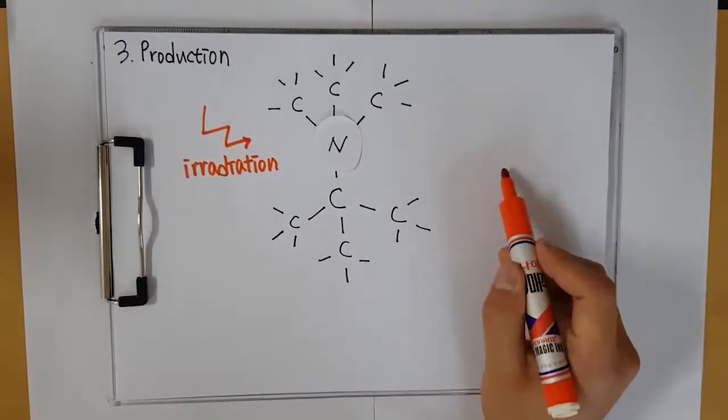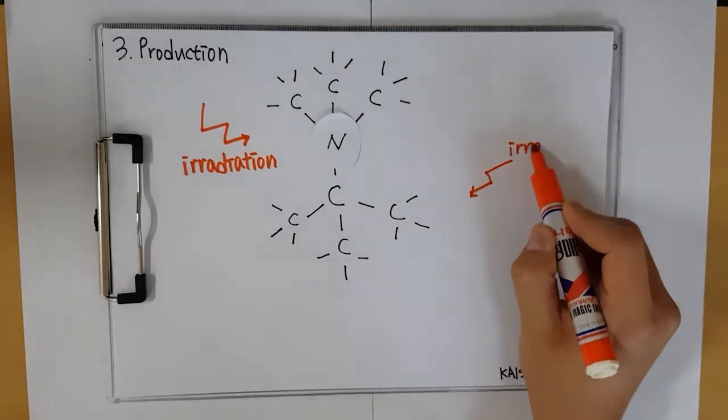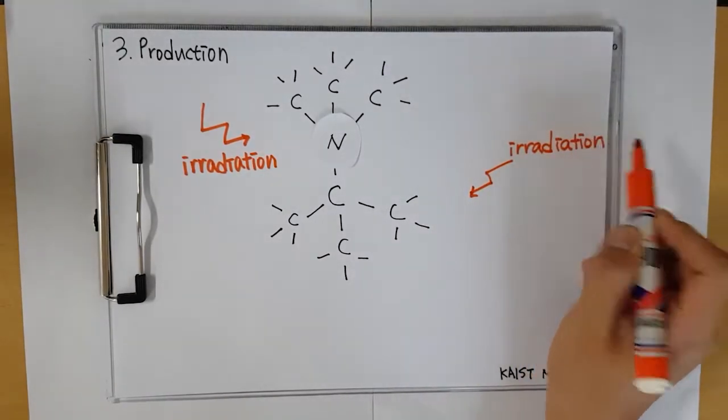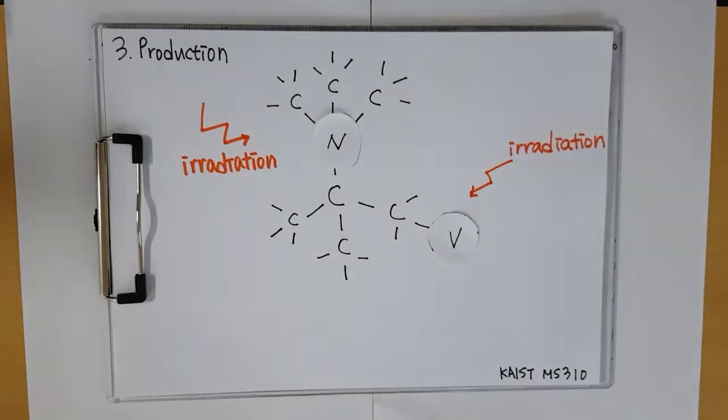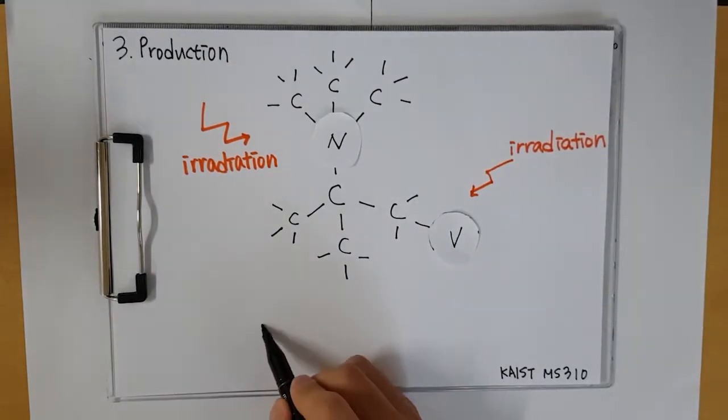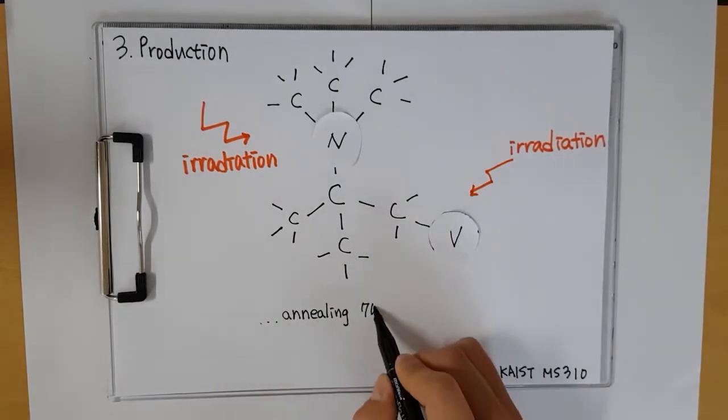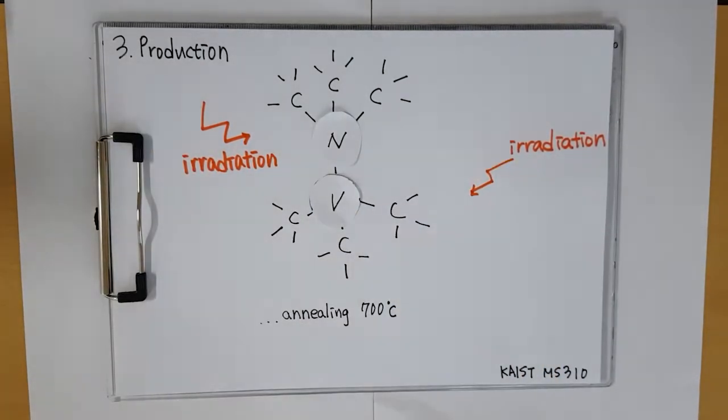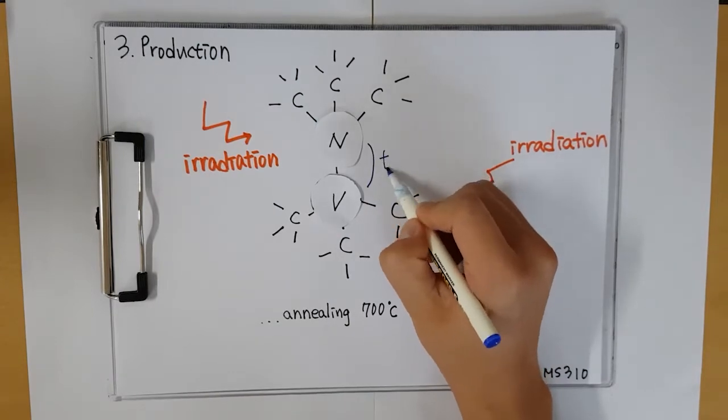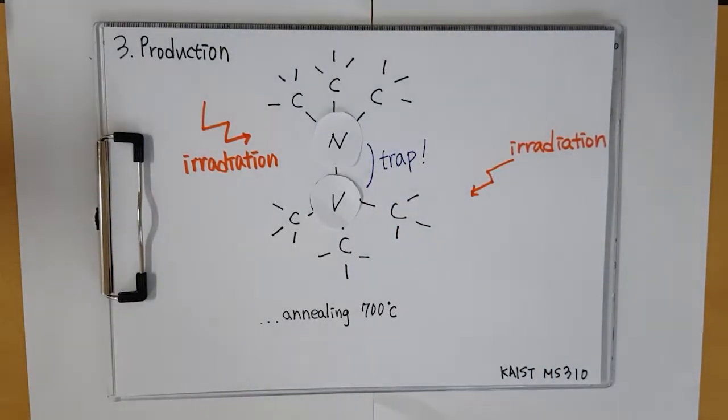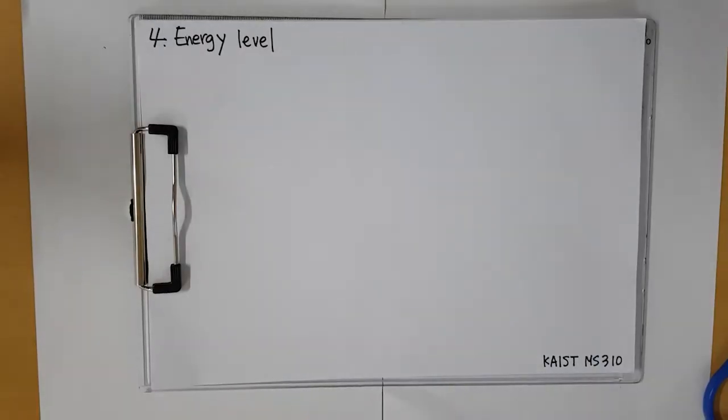Vacancy is also substituted by irradiation in different regions. However, vacancy can't move at room temperature, so annealing with 700 degrees Celsius is required to move. If mobile vacancy meets the nitrogen atom, nitrogen traps the vacancy.